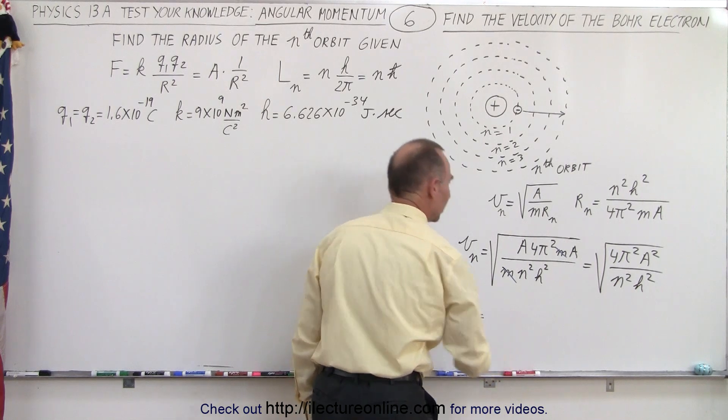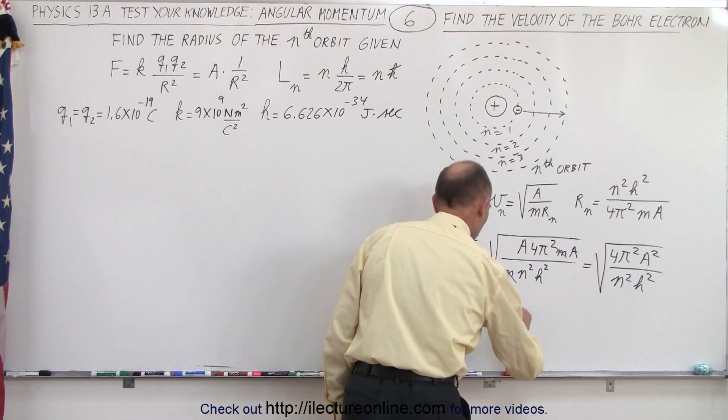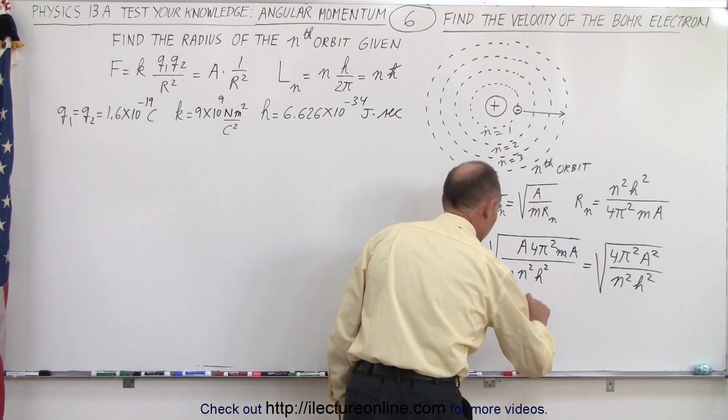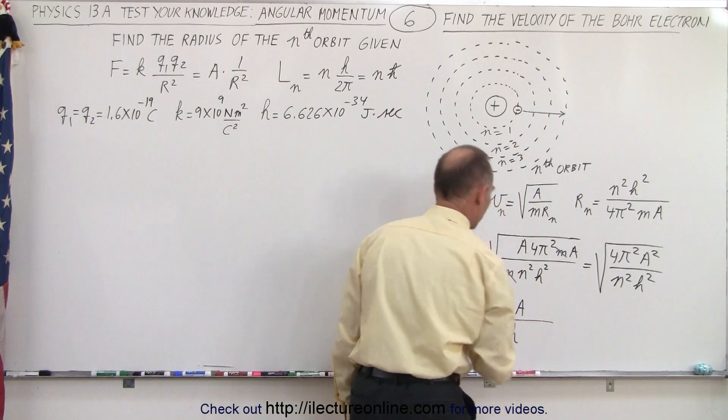So v sub n is equal to, when we take the square root of that, we get 2 pi a divided by n times h.